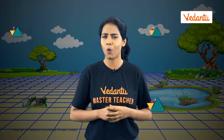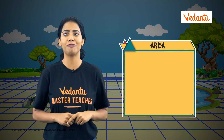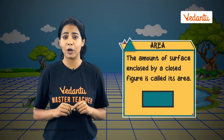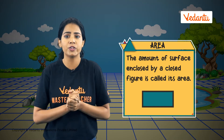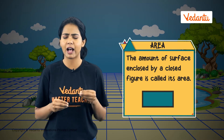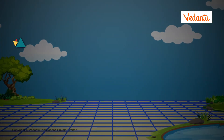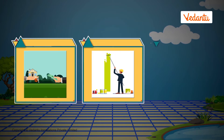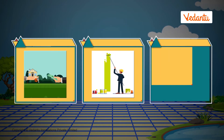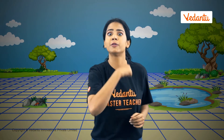Do you know what we just calculated? We calculated the area of both plots. The amount of surface enclosed by a closed figure is called its area. It specifies the amount of space inside any closed figure. We need to calculate area when we buy or sell a plot of land, paint a wall, or need to put tiles on a floor. I hear a few more noises — let's move ahead and check.